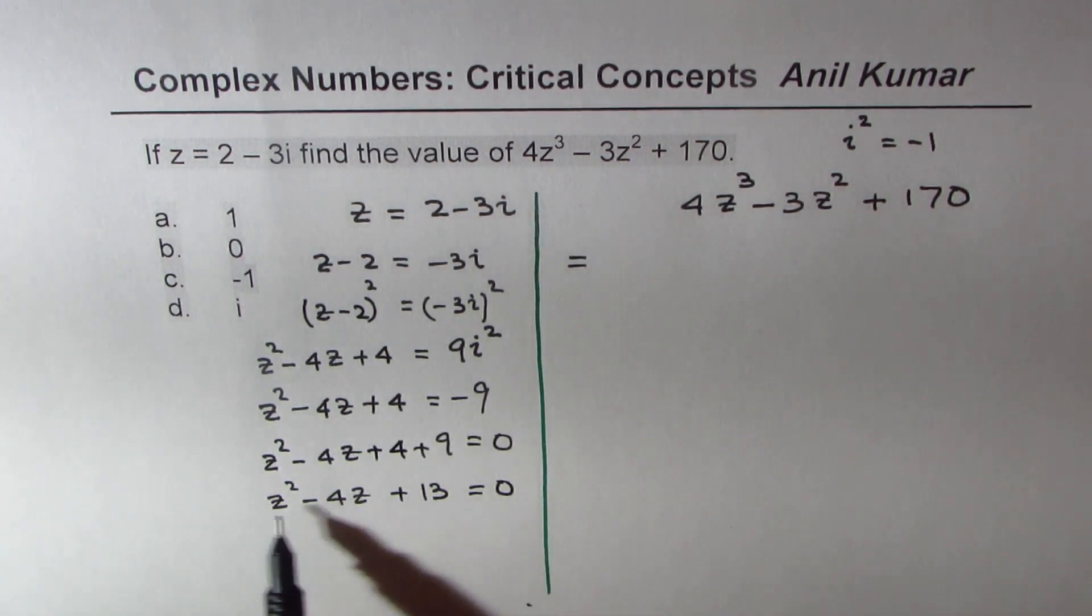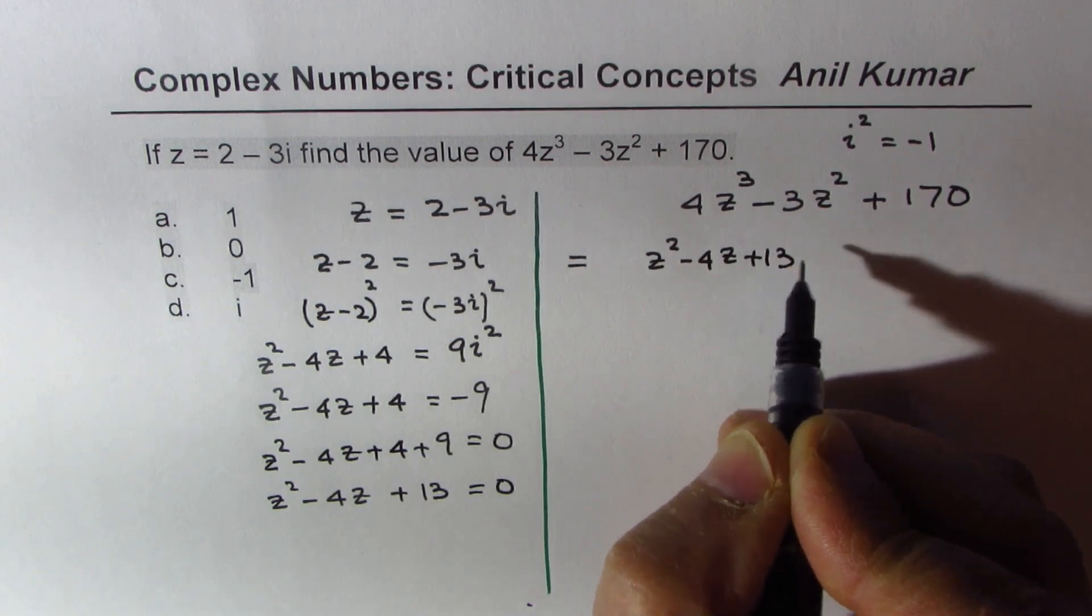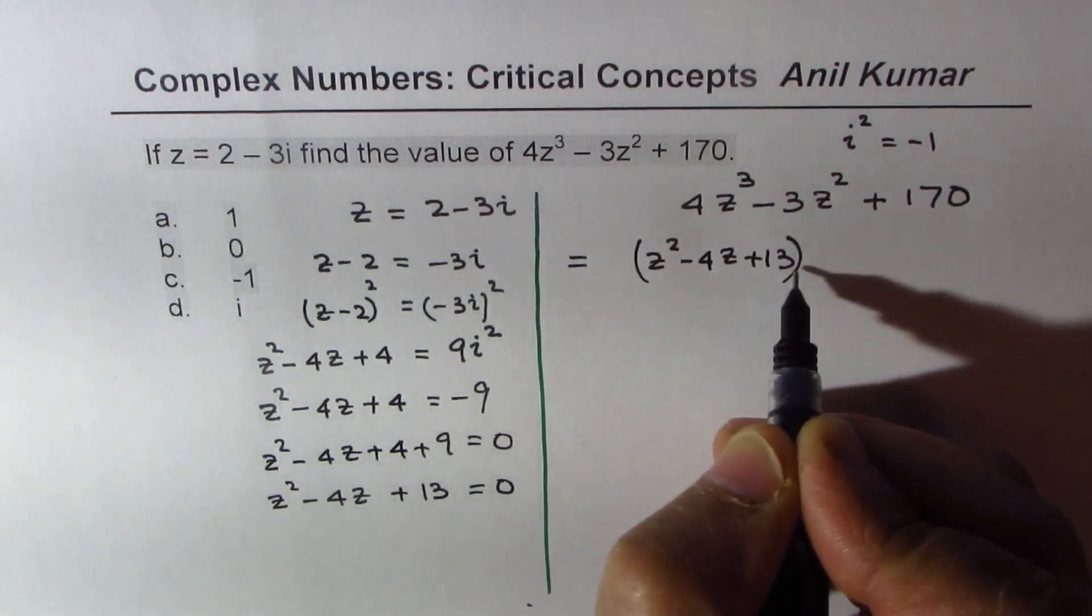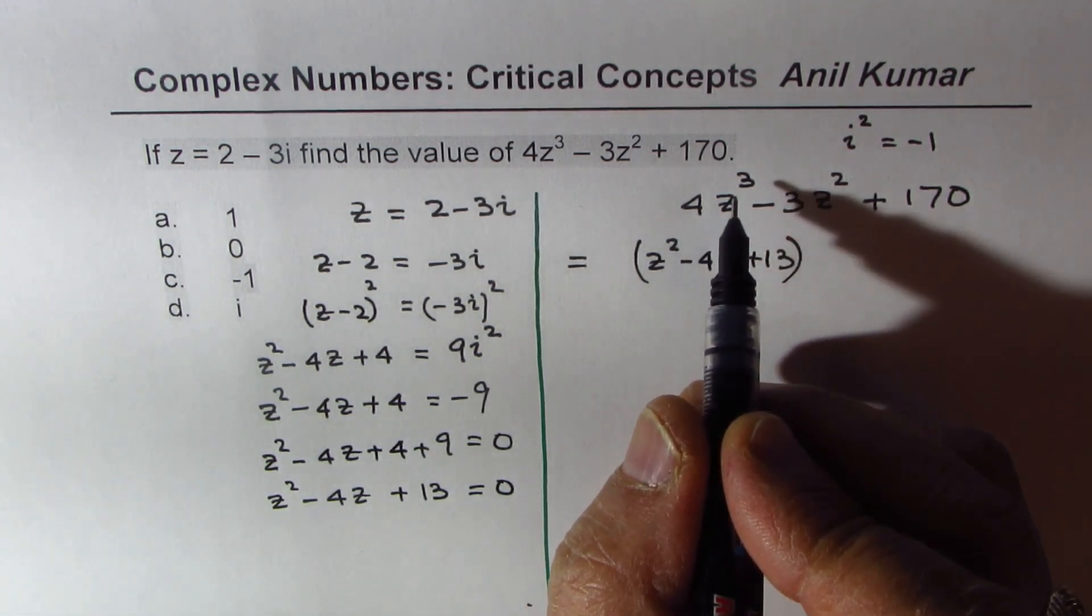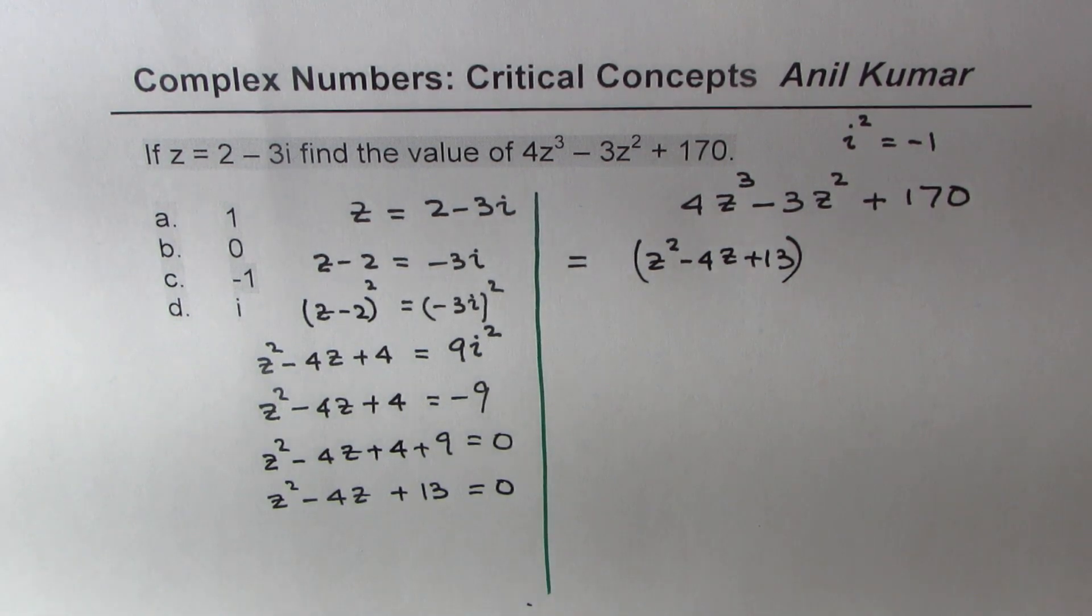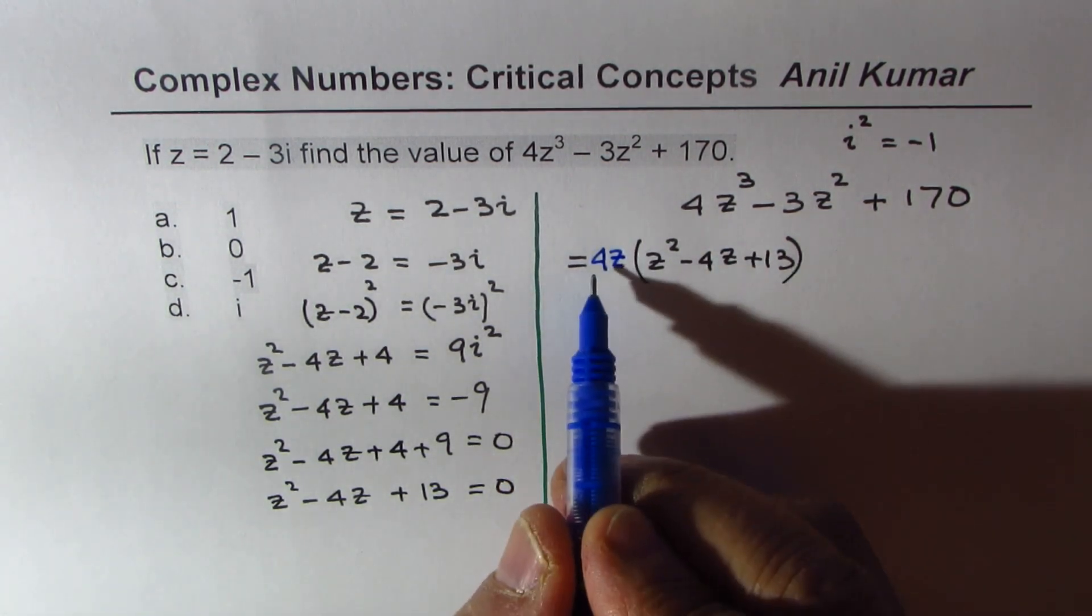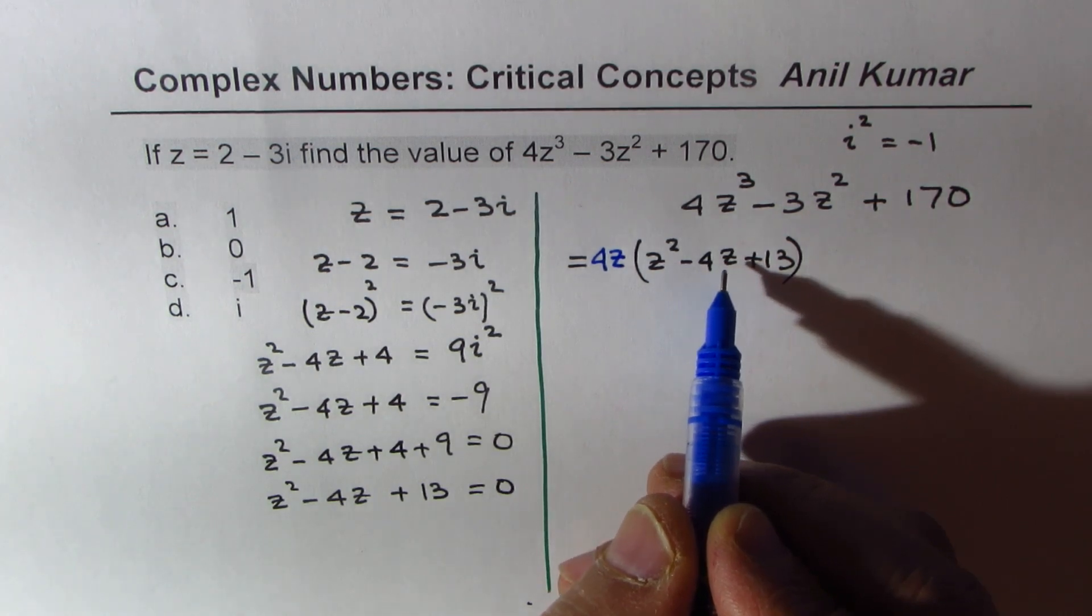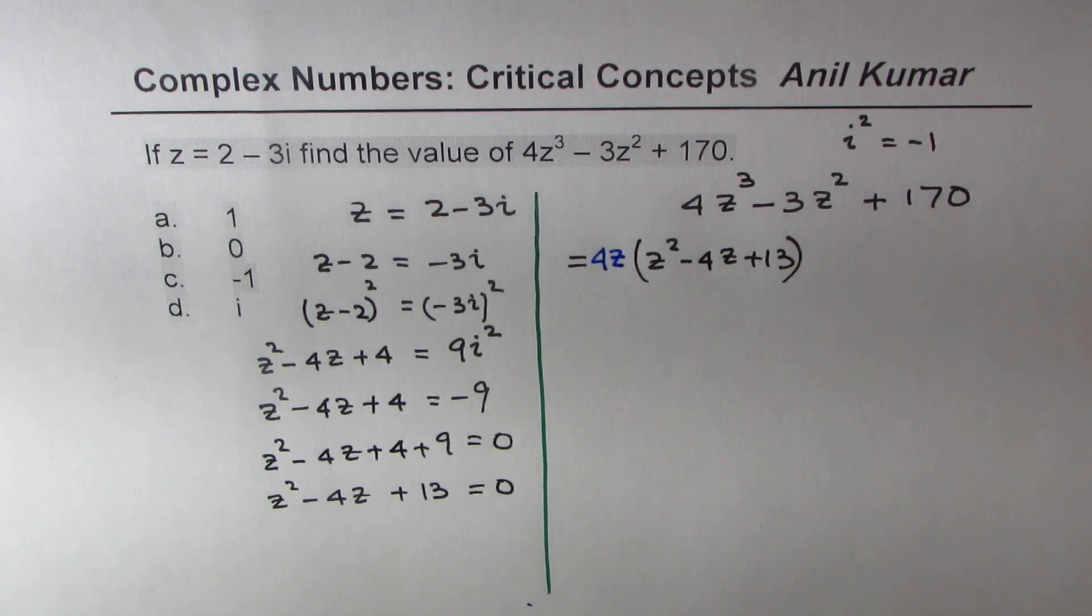We have this z² - 4z + 13, so all this is 0. Since we need 4z³ here, what can I do? I can multiply this number by 4z. Do you see that? Now if I open this, I get -16z², but I need only -3, I don't need -16. So what should I do? That is how we have to think about it.